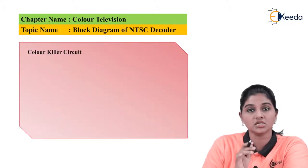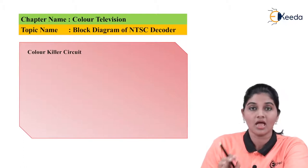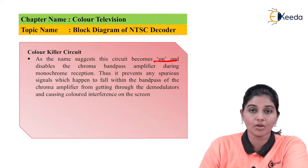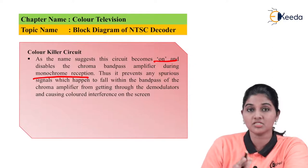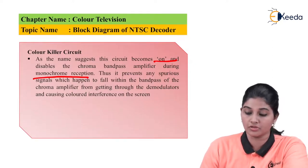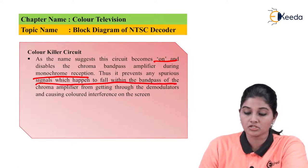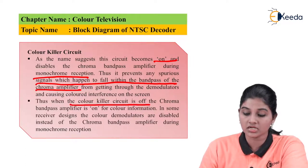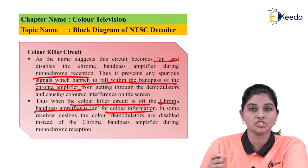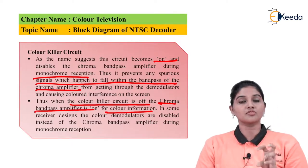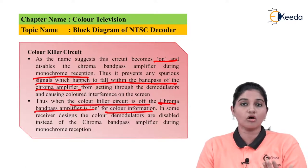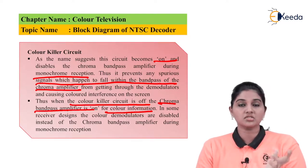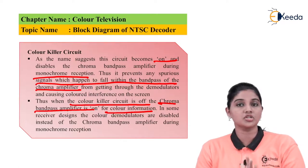The next circuit in the NTSC decoder is the color killer circuit. As its name indicates, it disables the chroma bandpass amplifier during monochrome reception, meaning no color information is displayed on the screen. This prevents any signal that falls within the bandpass of the chroma amplifier from causing interference. When the color killer circuit is off, the chroma bandpass amplifier is active and colorful information is displayed on the screen. So basically it performs the function of color killing — when on, it passes only monochrome information; when off, color information is displayed.